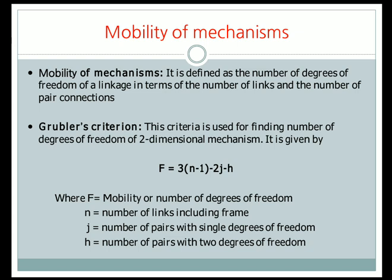If the mechanism is a two-dimensional or planar mechanism, then we will consider Grubbler's criteria for it. This criteria is used for finding the number of degrees of freedom of a two-dimensional mechanism. It is given by f = 3(n-1) - 2j - h, where f is the mobility or number of degrees of freedom, n is the number of links including the frame, j is the number of pairs with single degrees of freedom, and h is the number of pairs with two degrees of freedom.